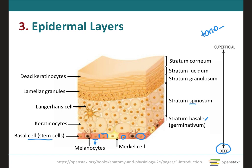Besides the keratinocytes and stem cells, we also have the presence of melanocytes and tactile epithelial cells, which are called Merkel cells, and we will talk more about the different cell types in the next slide. The stratum basale is sometimes also referred to as stratum germinativum. Germinativum means sprout, and this comes from the fact that the stem cells located in this layer will give rise to new keratinocytes.